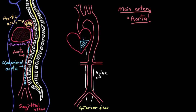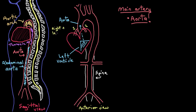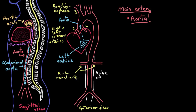Blood gets pumped out of the left ventricle and into the aorta, which has lots of little arteries branching off of it to take blood to different parts of the body. Going back to the highway analogy, the left and right coronary arteries would be exits one and two. The brachiocephalic artery supplies blood to your brain and right arm. The left and right renal arteries supply your kidneys, and the left and right common iliac arteries supply blood to your pelvis and lower limbs. There are many other arteries that come off the aorta as well.